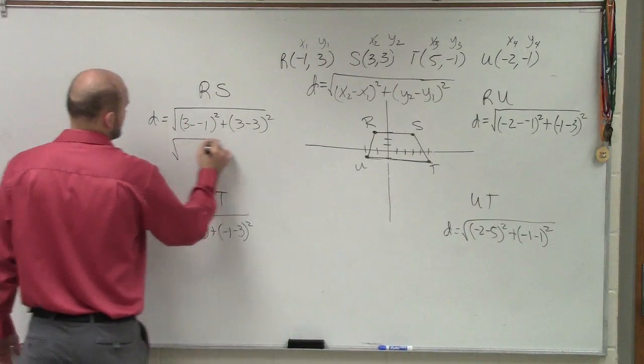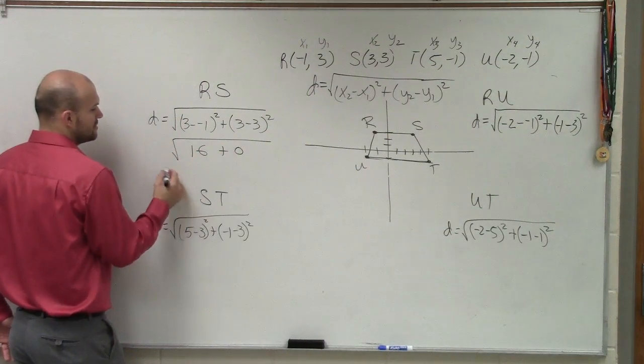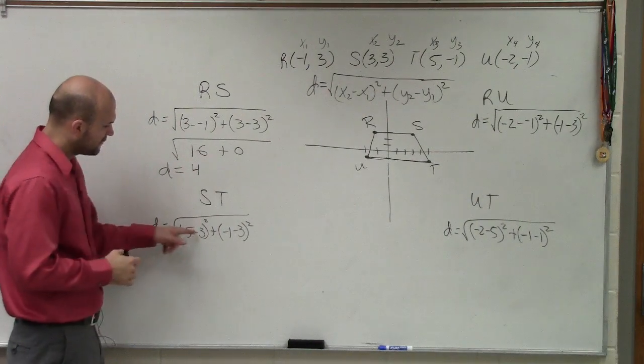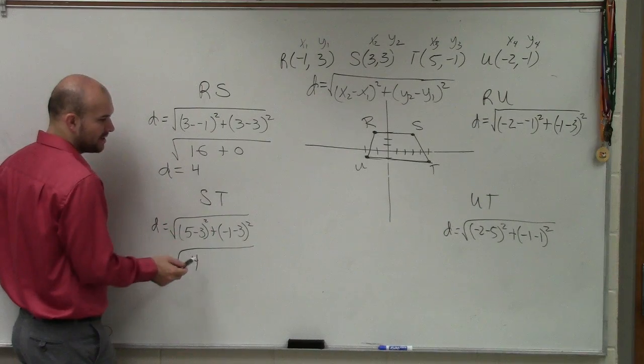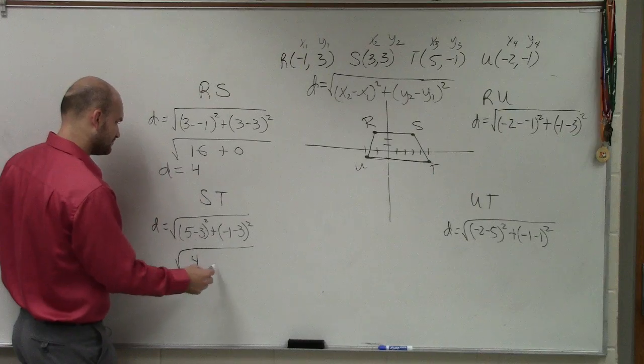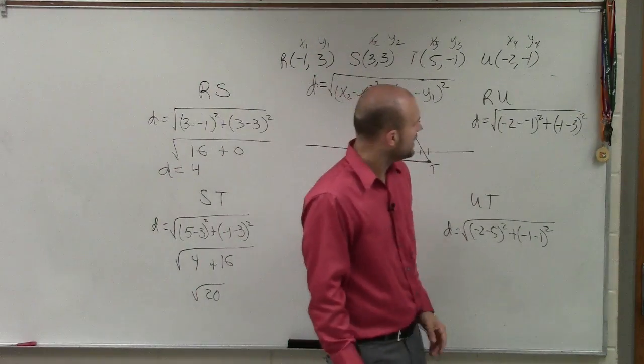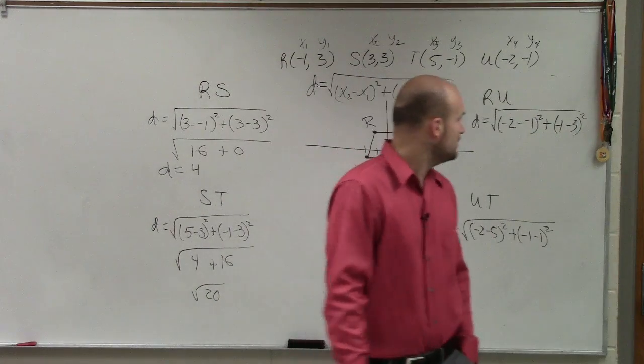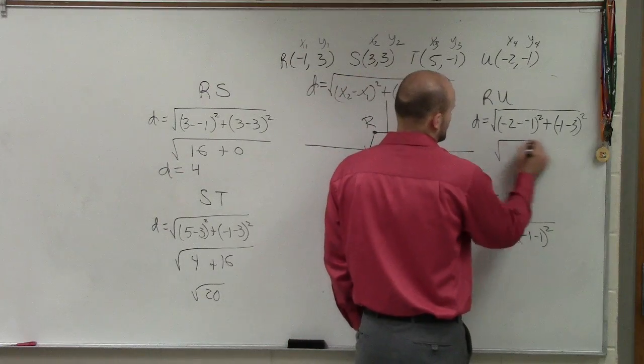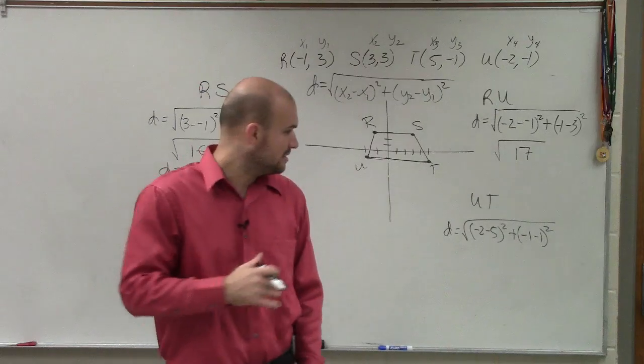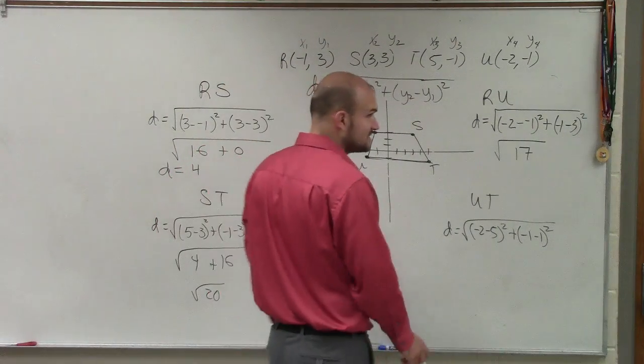Now let's go and simplify this as best we can. So 3 minus a negative 1 is going to be 4. 4 squared is 16 plus 0. So the distance equals the square root of 16 is 4. Over here, we have negative 1 squared is 1 and negative 4 squared is 16, so the square root of 17. Over here, I have negative 2 minus 5, which would be a negative 7 squared is 49.